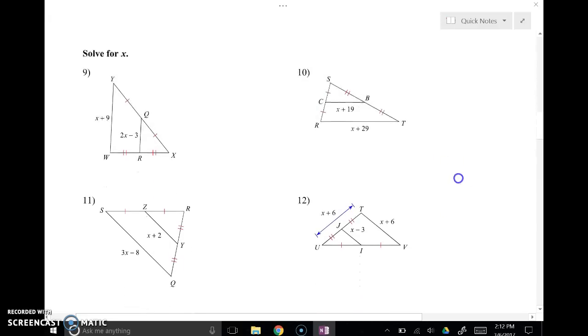I do want to do one of these algebraic ones with you. We'll do number 9 here. QR is the mid-segment. So keep in mind that you need 2 of the QRs to equal 1 of the YWs. Because again, this is half of this. So 2 times 2X minus 3 is X plus 9.